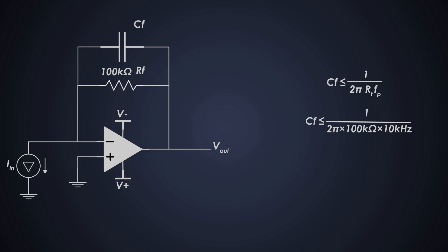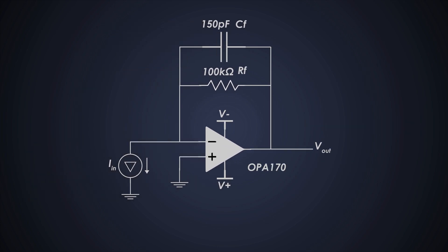Where RF is the feedback resistor and FP is bandwidth. So we get 159 picofarads. We'll use a standard value of 150 picofarads. So this is how the circuit looks. We'll use an OPA170 op-amp from Texas Instruments for this amplifier design.